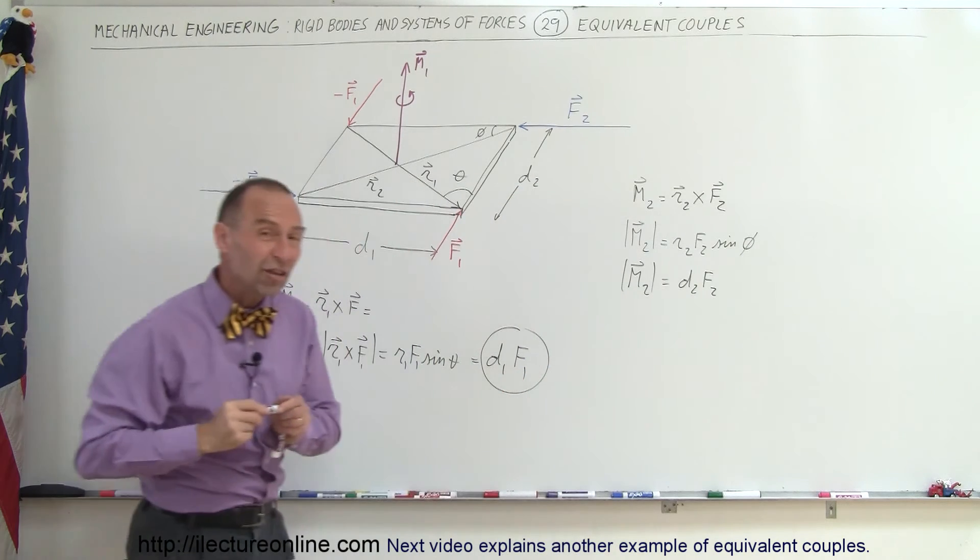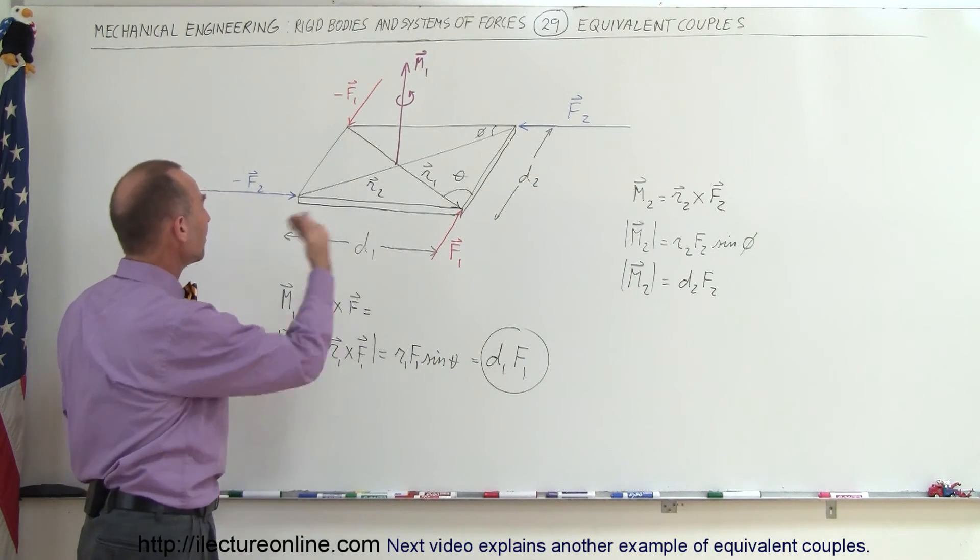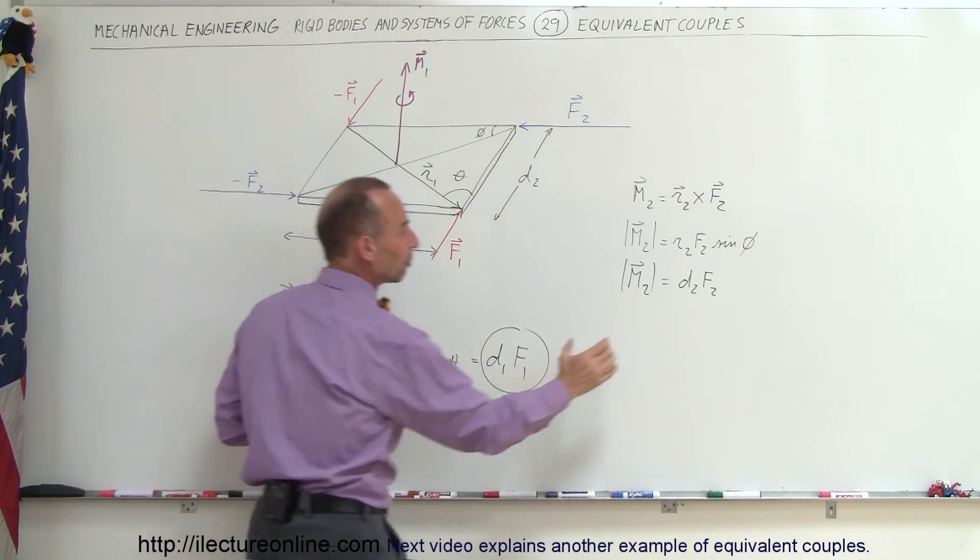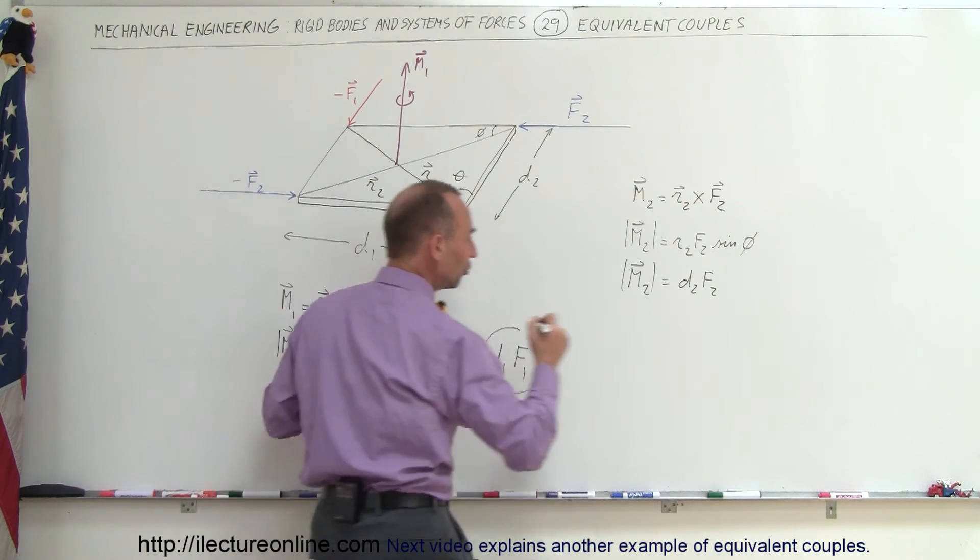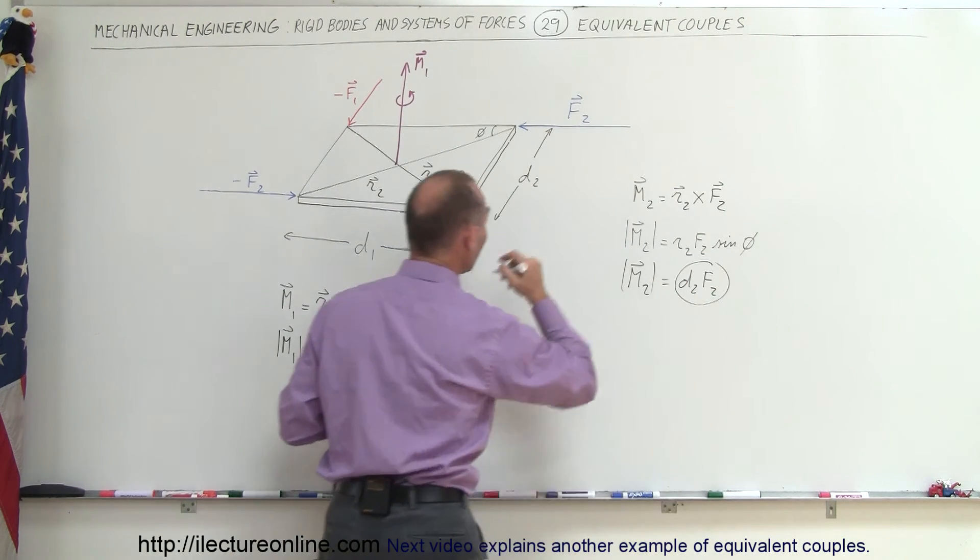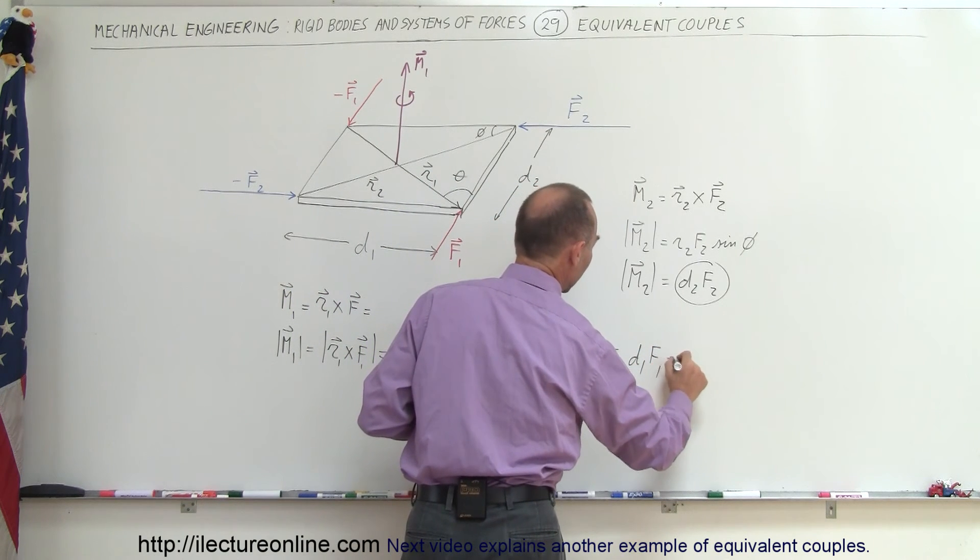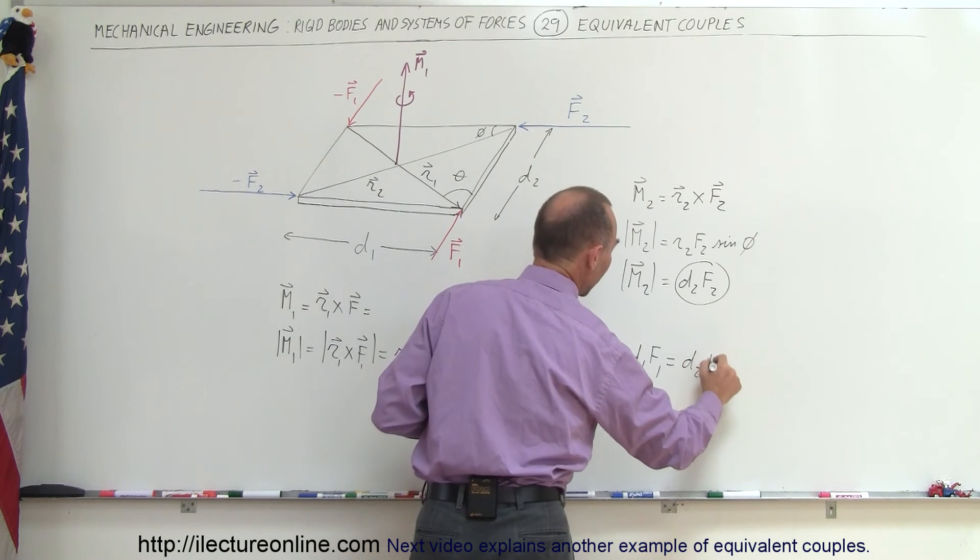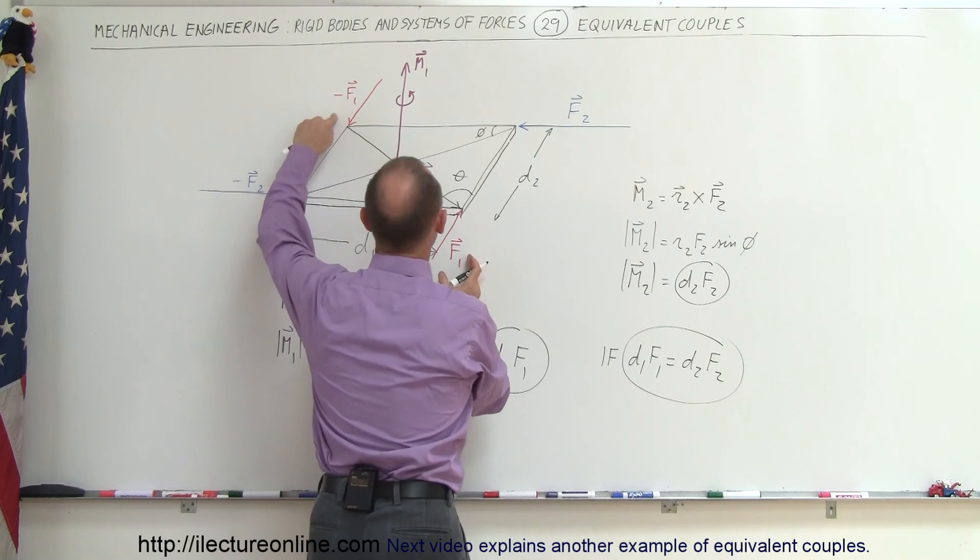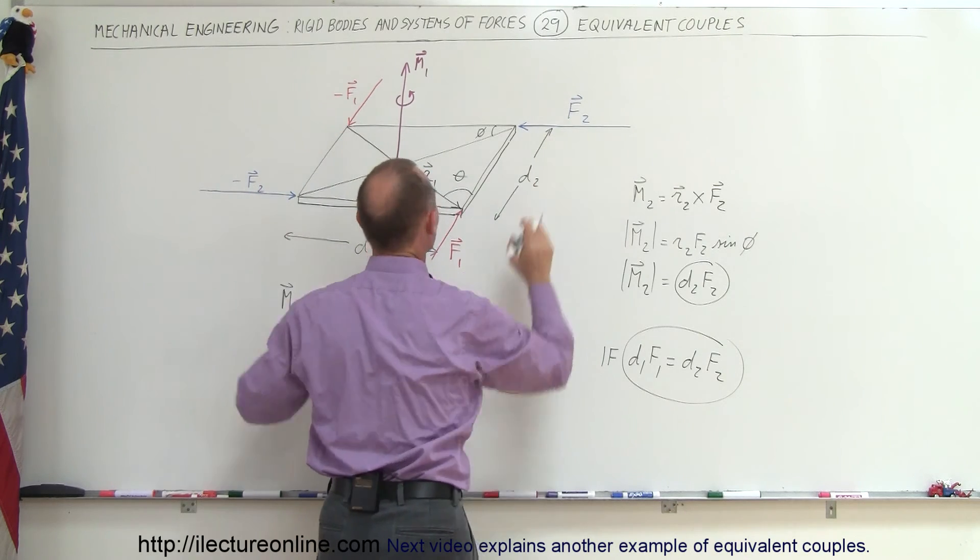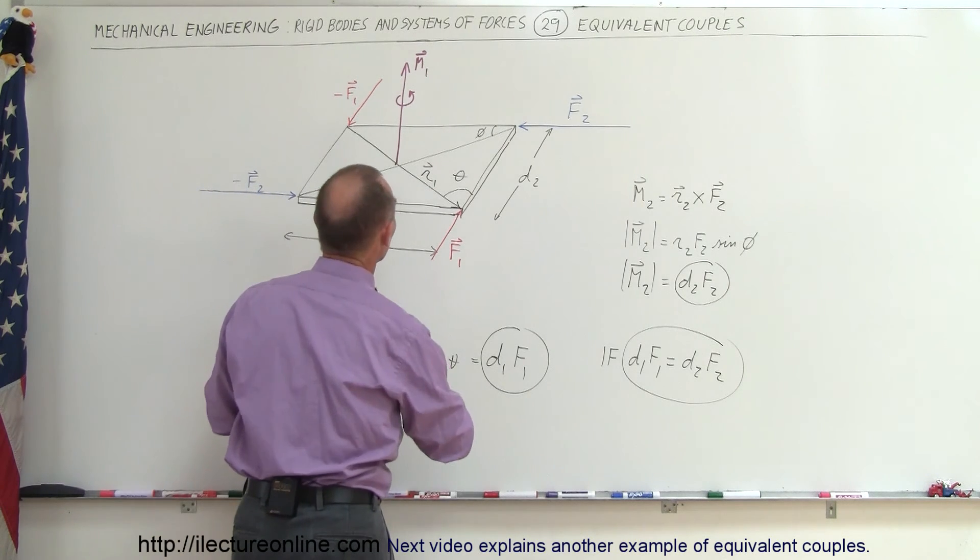Now, if we change the magnitude or we adjust the magnitude of F2 and minus F2, we just saw that the product D2 times F2 is equal to D1 times F1. If those two are equal, we can consider those as equivalent couples. So if D1 F1 is equal to D2 F2, then F1 negative F1 and F2 negative F2 are equivalent couples because they give you equivalent moments.